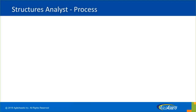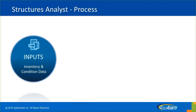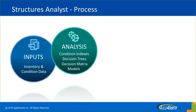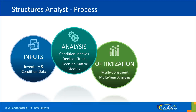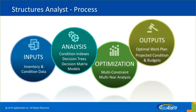Let's see how the Structure Analyst works. Data starts with inputs — inventory and condition data are stored in the system. If you are using Structure Inspector, it can be linked, or it can use inventory and condition data stored in the system itself. The second part is analysis, which generates condition indexes for the inspection and inventory data. Then the decision logic you define and deterioration models in the system — based on the what-if scenario you define with multi-constraint, multi-year analysis — the optimization solver will produce the optimal work plan, project conditions, and budget based on those constraints.